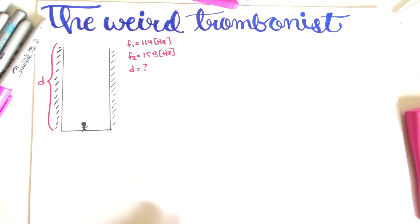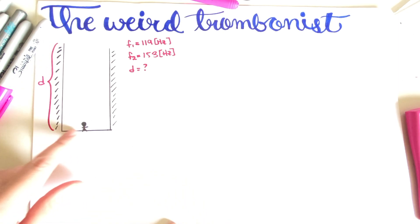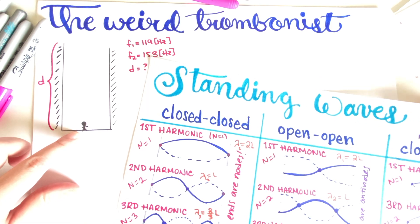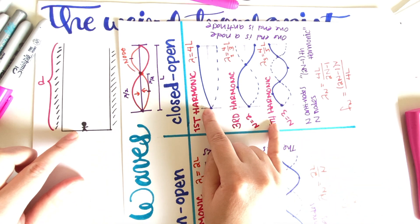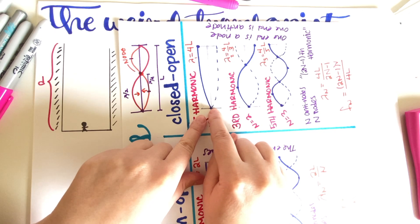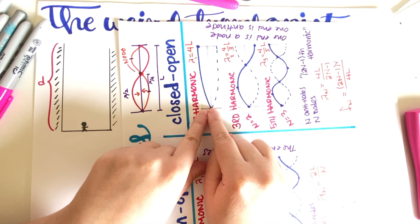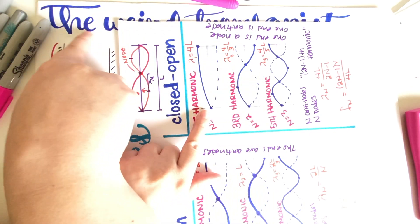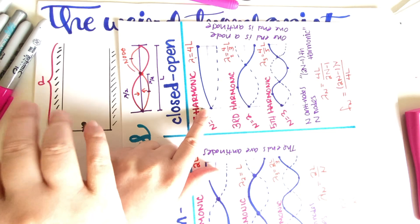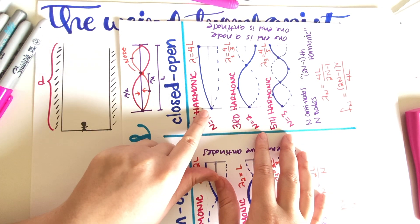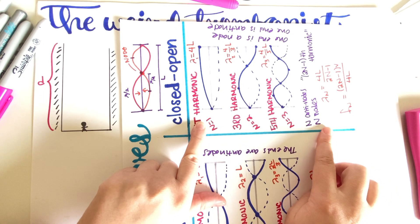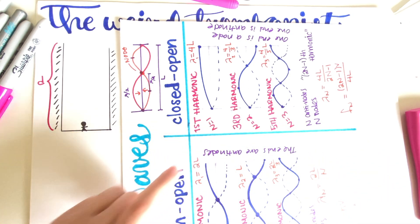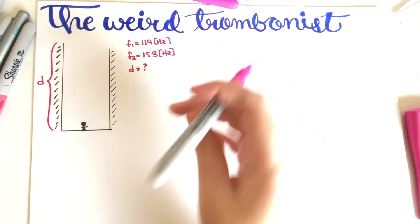I have a little sketch of the well here. The distance is D and the trombonist is at the bottom. What's happening is we have a closed-open scenario — the bottom where the trombonist is is closed, and the top is open air. So even though the problem doesn't tell you this directly, this is a closed-open scenario.